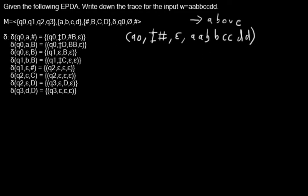Now let's make it a little bit colorful. At this moment I have something like a pointer and it always points to our topmost symbol on our topmost stack — so in this case, on our bottom symbol. And in q0 I can only use this one transition.